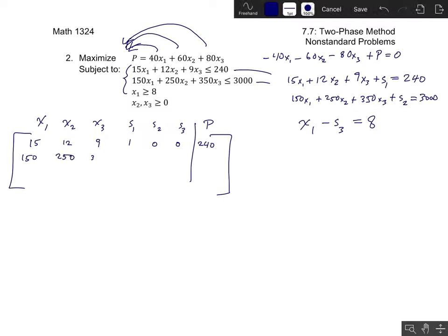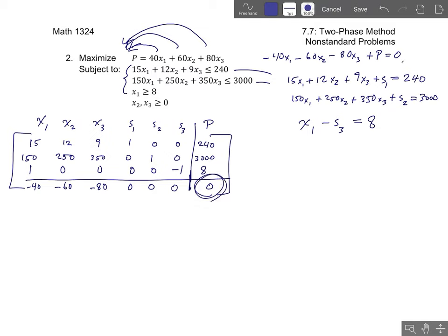So we have 15, 12, 9, 1, and then 0, 0, 240. That's our first constraint equation translated. So remember that we start by translating the constraint equations and then the objective row goes last. Our second constraint equation looks like this: 150, 250, 350, 0, 1, 0, 3000, because that one uses the second slack variable. And then this row is a little bit strange because this is our third constraint. So this one will look like 1, 0, 0, 0, 0, and then the coefficient on s3 is a negative one. So we'll get a negative one there.